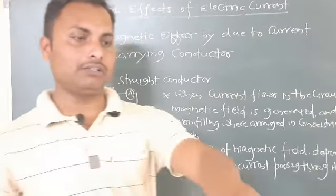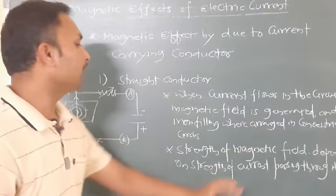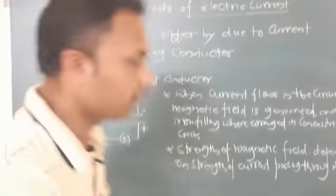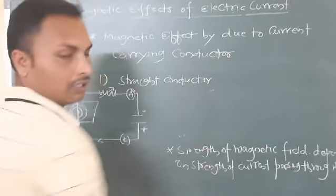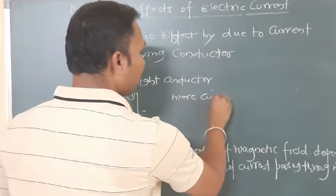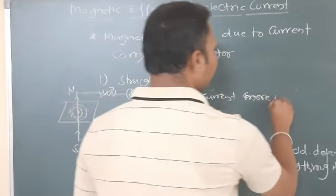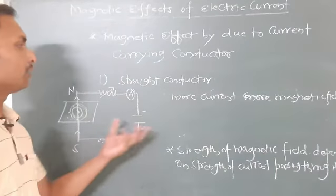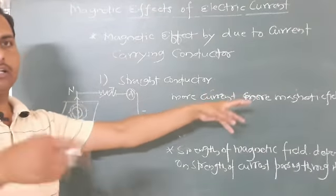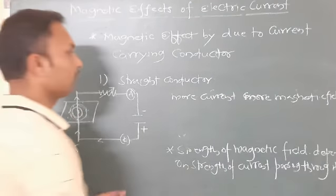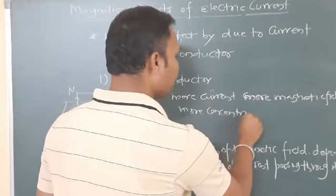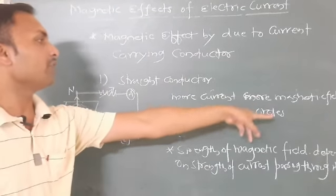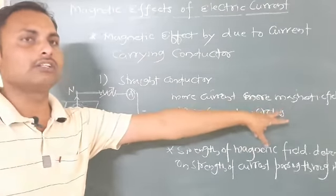We can say: more current, more magnetic field, and more concentric circles. If we pass more current through the conductor, more magnetic field will be generated. If more magnetic field is generated, more concentric circles will be formed.